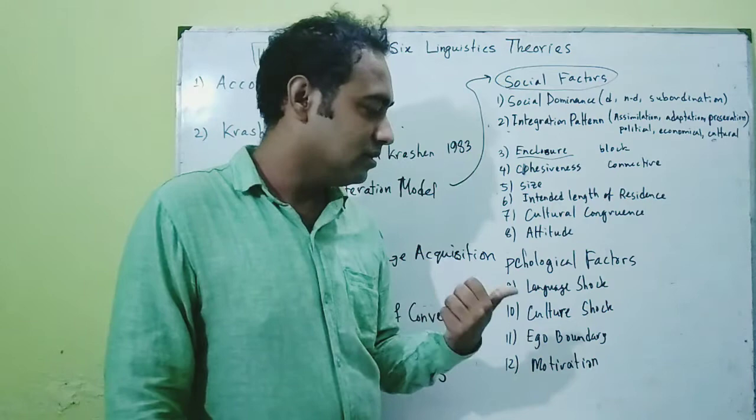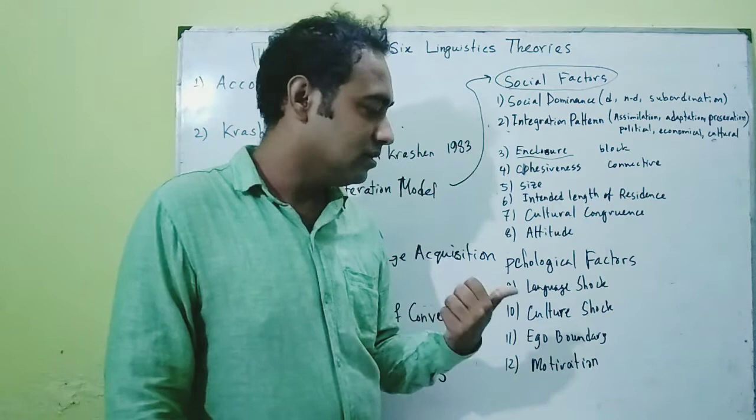So these 12 factors, according to John Schumann's acculturation model, play a very significant role in language learning. Thank you — we'll move to another theory afterwards.